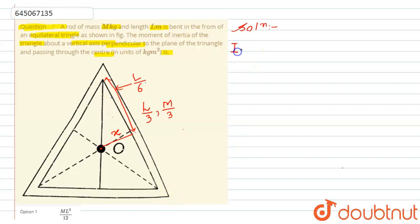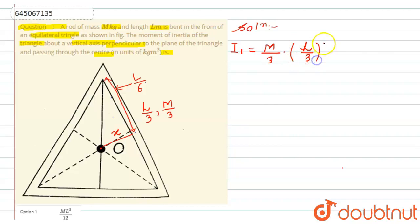The moment of inertia for one segment about the axis, I₁, is given by the parallel axis theorem: I₁ = (M/3)·(L/3)²·(1/12) + (M/3)·x². We need to first find the value of x.